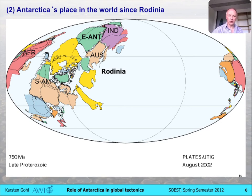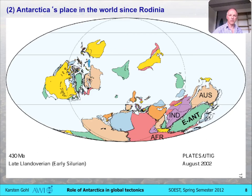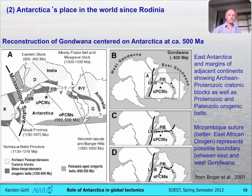If you look at East Antarctica, already back in Rodinia times, it formed a part of Rodinia together with India and Australia. By the time a couple of hundred million years later — around 430 Ma — it was apparently already on the southern hemisphere. By then, Africa connected up to East Antarctica. So by around 500 to 400 Ma, the overall Gondwana continent was assembled. Many of the East Antarctic cratons actually have quite a long history with the neighboring continents India and Australia, and part of Africa.